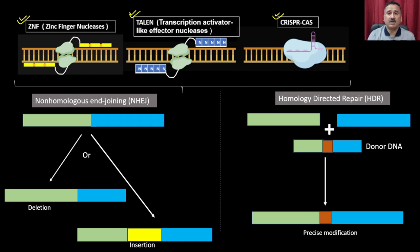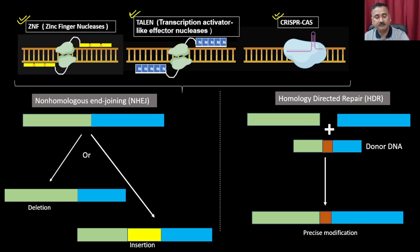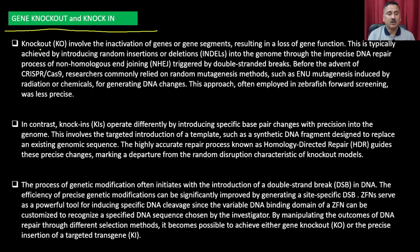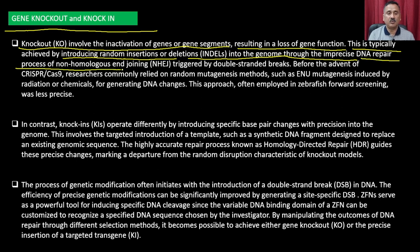We are discussing modern tools currently being used for genome editing — zinc finger nucleases, TALENs, and CRISPR-Cas. The major applications of TALENs include gene knockout, gene knock-ins, targeted chromosomal deletions, modification of the genome, crop improvement, and application in HIV treatment. Gene knockout involves the inactivation of a gene or gene segment, resulting in the loss of gene function.